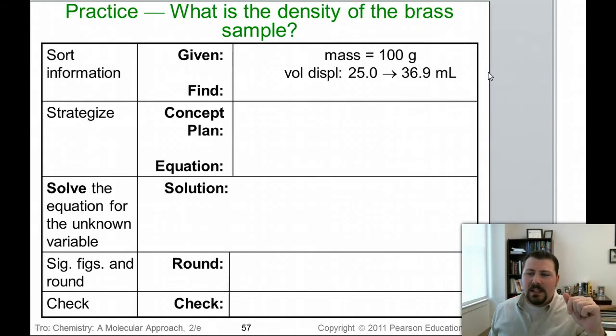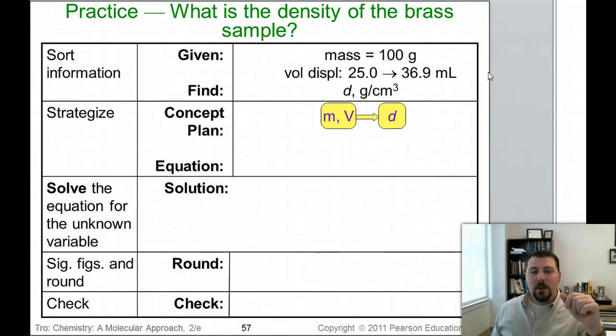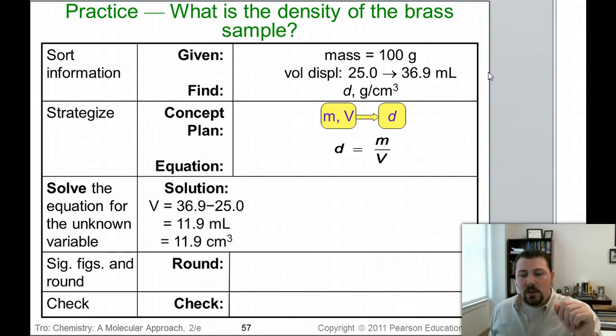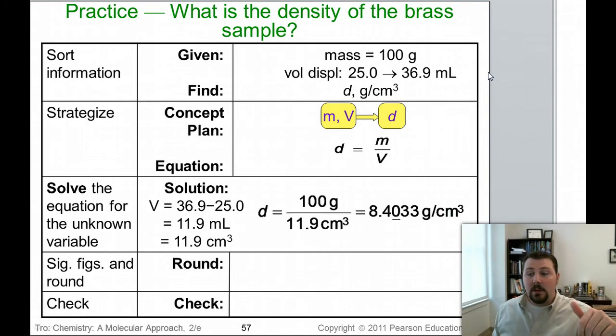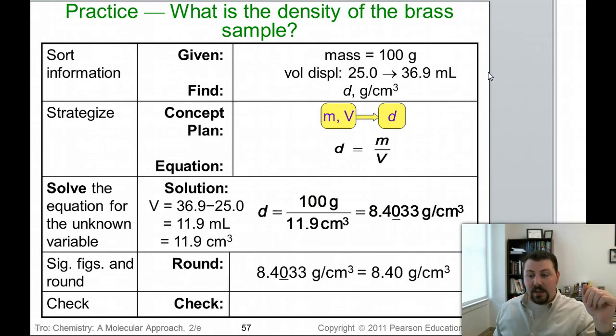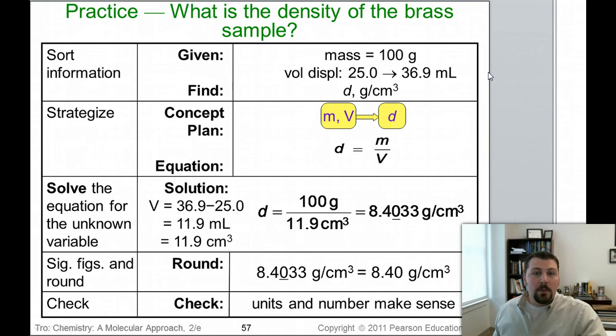I'm listing the information that we're given, and then we need to find the density. I'm going to use mass and volume to get density. This is my equation for density, mass over volume. I just need to find out what that volume is. I take the level that it raised up to, 36.9, subtract off 25 where we started, and I get 11.9 milliliters or 11.9 cubic centimeters. Then I take mass over that volume, and I get 8.403 grams per cubic centimeter. Therefore, rounding to the appropriate significant figures, 8.40 grams per cubic centimeter. That's about what a brass sample should have. That makes sense.